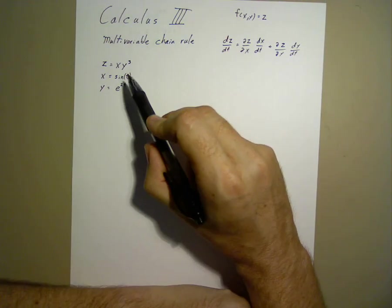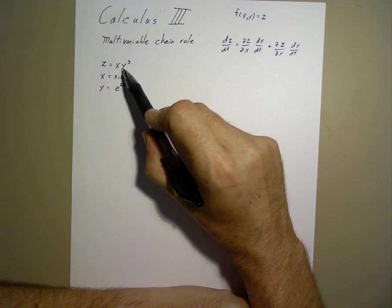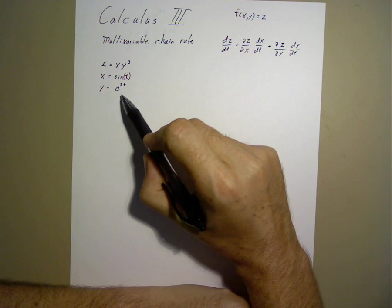In this example, we have x times y to the power of 3, with x and y defined as such.